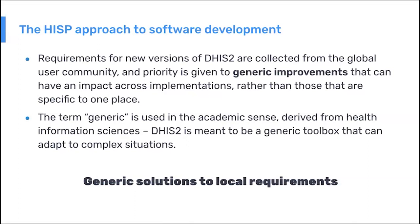Managing all this and coming up with a roadmap is of course a complicated task. The main approach is to look at specific feature requirements coming in and try to find generic ways of solving them, so those solutions can be used elsewhere. 'Generic' here means making something adaptable and flexible for different purposes. From the beginning of DHIS2 development, the slogan of the development team has been 'generic solutions to local requirements.'